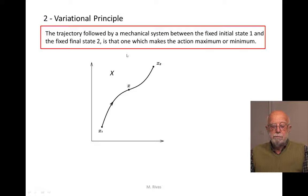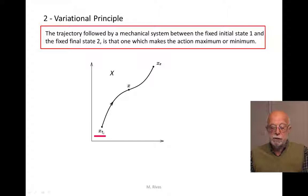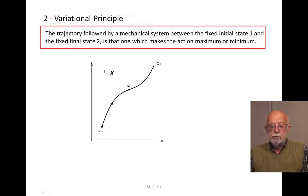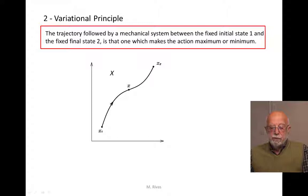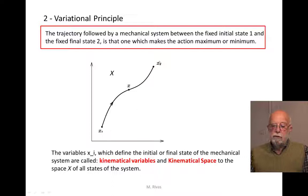The second fundamental principle is the variational principle, stated as follows. We have an arbitrary mechanical system which is in some initial state X₁, follows a trajectory in the space X, and arrives at the final state X₂. This postulate means that for any mechanical system, the path followed is the one which makes the action a maximum or minimum. We shall call the variables which define the boundary of this variational description the kinematical variables, in the kinematical space or space of states of the system.